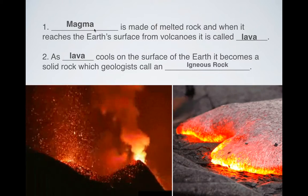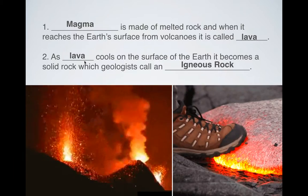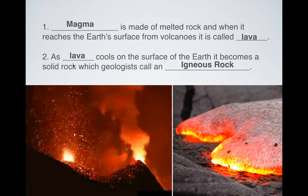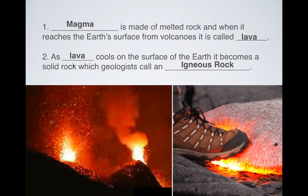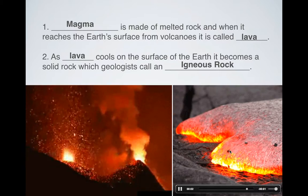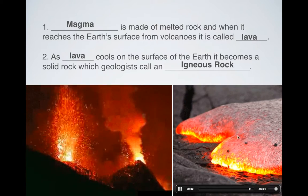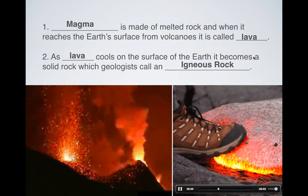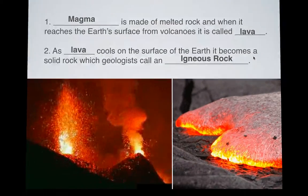So as lava cools, it becomes an igneous rock because it solidifies. And as it solidifies, there are different types of igneous rock too, but it turns into a solid substance. You can almost see how viscous lava is that you're able to push on it, and it kind of pushes back. But as it cools, it starts to gain properties of these igneous rocks.